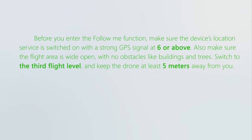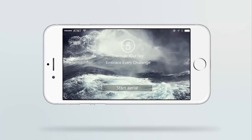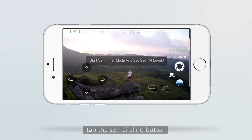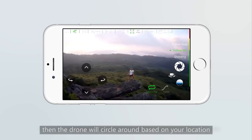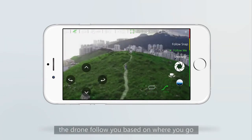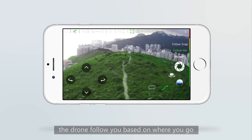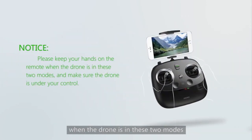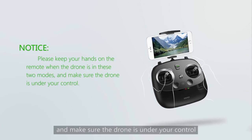Before you enter the follow me function, make sure the device's location service is switched on with a strong GPS signal of 6 or above. Also make sure the flight area is wide open with no obstacles like buildings and trees. Switch to the correct flight level and keep the drone at least 5 meters away from you. When the drone is ready, tap the self-circling button and the drone will circle around based on your location. Likewise, tap the follow button and the drone will follow you based on where you go. Please keep your hands on the remote when the drone is in these two modes and make sure the drone is under your control.